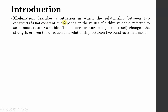Moderation describes a situation in which the relationship between two constructs is not constant but is actually dependent on the values of a third variable, referred to as a moderating variable. This moderating variable changes the strength or even the direction of the relationship between the two constructs — it may strengthen or weaken that relationship.